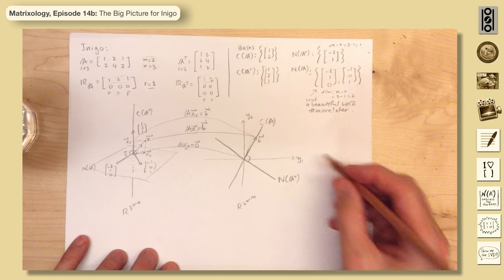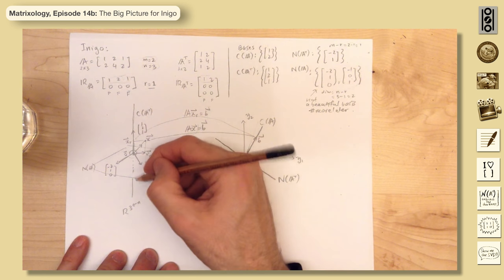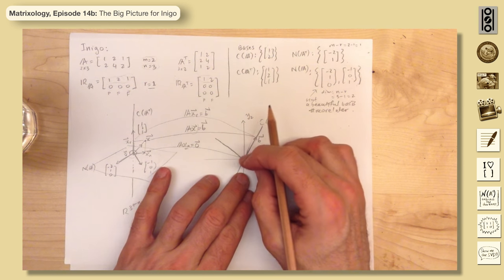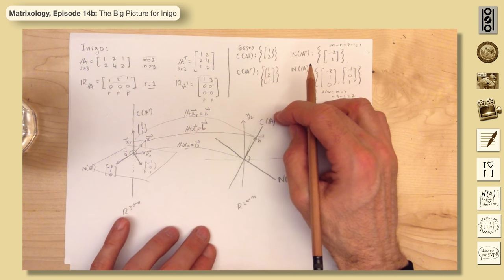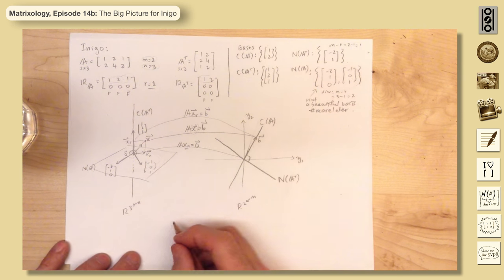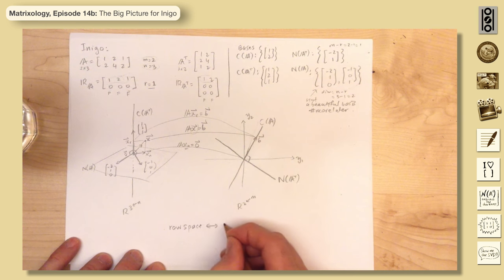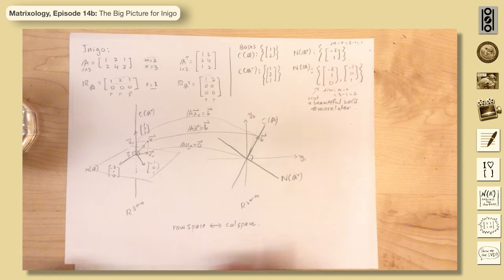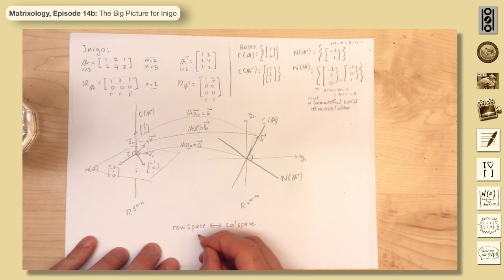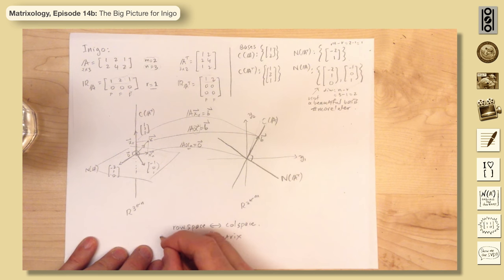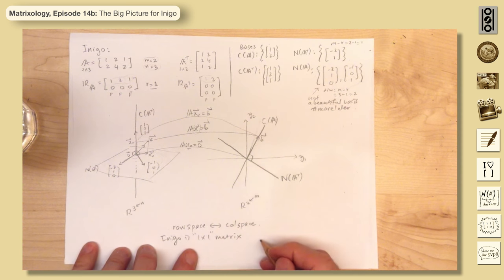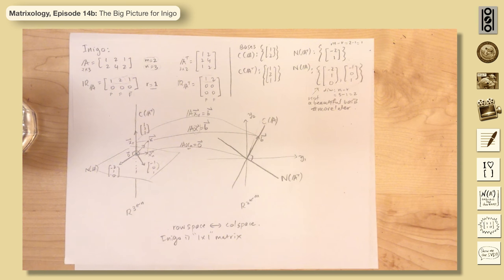So now there's a line in three dimensions that gets sent to this line. And we showed in class that when you take this line, when you map any point on this line, it will go over to here and stretch by a factor of square root of 30. So row space to column space can be mapped. It's invertible. So it's a one-by-one matrix. All right? Inigo is a one-by-one matrix, kind of, on the inside. This is R by R, the rank.